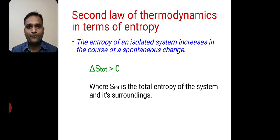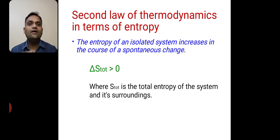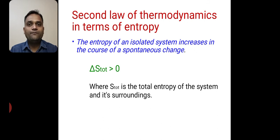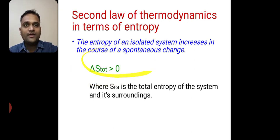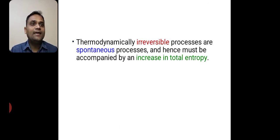We have to consider the second law of thermodynamics in terms of entropy. The law states: the entropy of an isolated system increases in the course of a spontaneous change. So delta S total is greater than 0, where S total is the total entropy of the system and its surroundings. Thermodynamically irreversible processes are spontaneous processes and hence must be accompanied by an increase in total entropy.